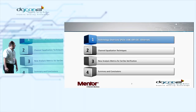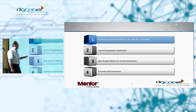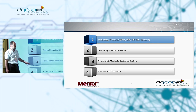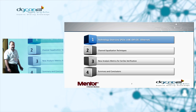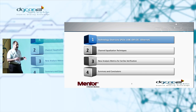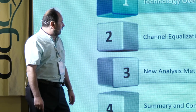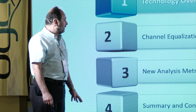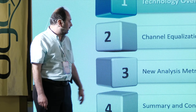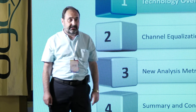The agenda for today will include a brief introduction and overview of the main topologies for PCI, USB, OIF/CEI, and Ethernet family of interfaces. The main focus will be on channel equalization techniques and the differences between techniques applied for those interfaces, followed by new analysis metrics for service verification, a summary and conclusions, and a Q&A session if time permits.